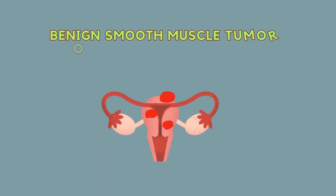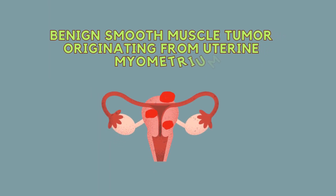Uterine fibroids are the benign smooth muscle tumor originating from the uterine myometrium, that is the muscle of the uterus. Fibroids are not always very scary, as they are benign growths, which means they are not cancerous and have a very low potential to turn into cancer. In fact, it is the most common pelvic tumor found in women of reproductive age group.